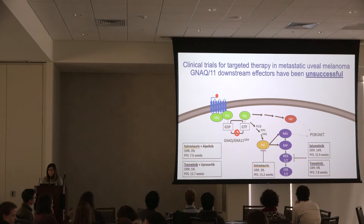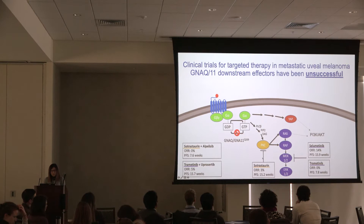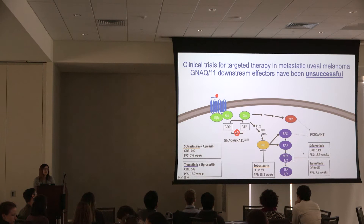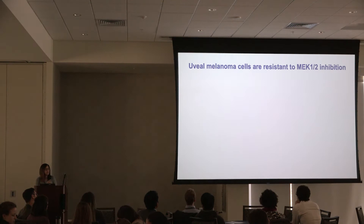There have been multiple clinical trials using targeted therapies downstream of GNAQ or GNA11, for example inhibiting MEK with selumetinib or trametinib, protein kinase C inhibitors with sotrastaurin, or combinations with PI3 kinase pathway inhibitors. As shown by the overall response rates and progression-free survival, these clinical trials were considered failures. Accordingly, we found that human uveal melanoma cell lines are also resistant to targeted therapy, as expected.